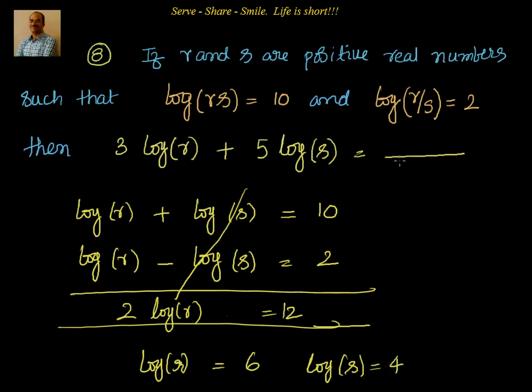So that means what we need is 3 into log r, which is equal to 6, plus 5 into log s, which is equal to 4. So 3 into 6 is 18 plus 5 into 4 is 20. So that's equal to 38.